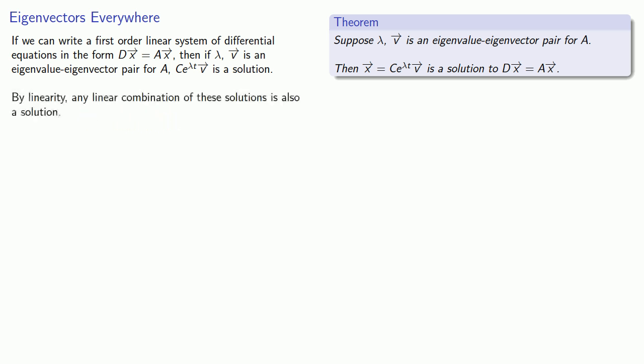By linearity, any linear combination of these solutions is also a solution. You should probably prove that. Now, if all the eigenvalues of A are real and distinct, we can find the general solution this way. But what if they're not?